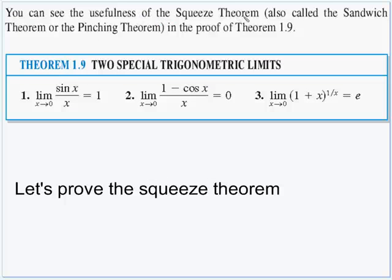You can see the usefulness of the squeeze theorem — also called the sandwich theorem or the pinching theorem — in the proof of theorem 1-9. We have three special limits: two trigonometric and one exponential. These will have to be memorized, though you can always reprove them on the AP test. The limit as x approaches 0 of sin(x)/x equals 1; the limit as x approaches 0 of (1 − cos x)/x equals 0; and the limit as x approaches 0 of (1 + x)^(1/x) equals e.